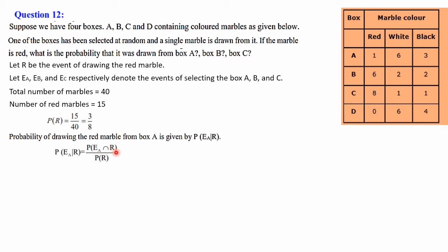P(Ea∩R) means box A and a red marble together — there is one red marble in box A out of 40 total marbles, so P(Ea∩R) = 1/40. P(R) = 3/8. Therefore, P(Ea|R) = (1/40) ÷ (3/8) = 1/40 × 8/3. Cancelling 8 and 40 gives 5 in the denominator, so 5×3 = 15, giving the answer 1/15.